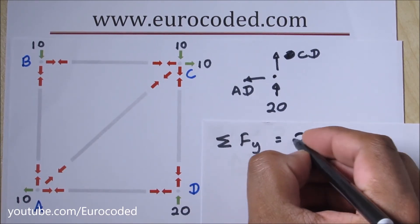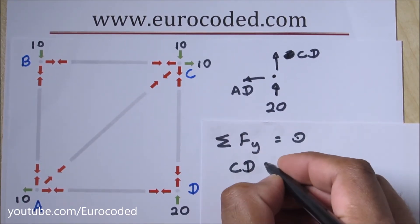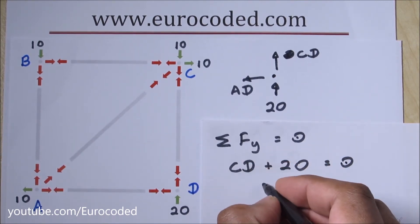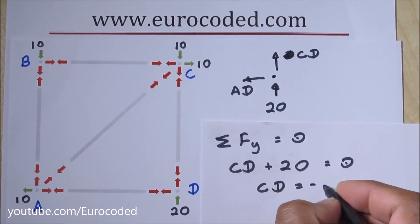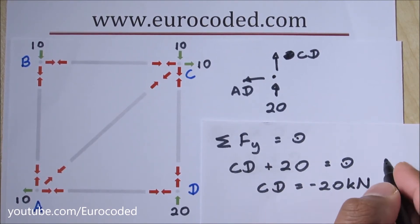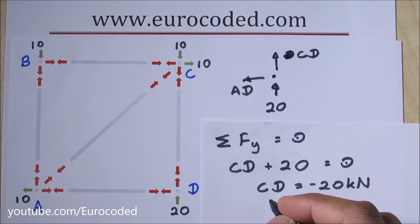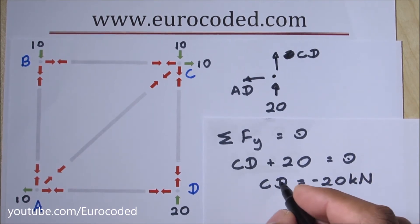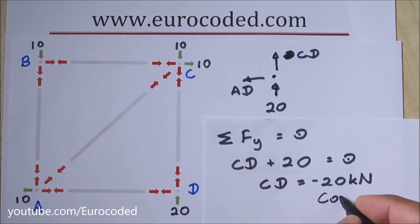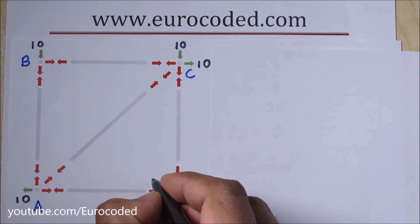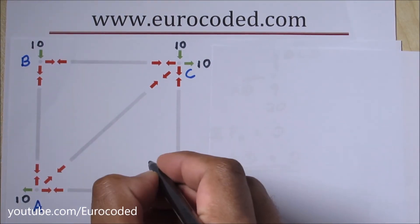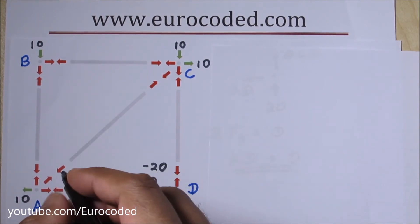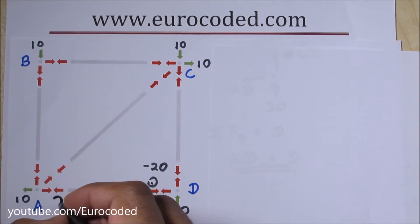If we look at vertical equilibrium, ΣFy equals zero gives: CD plus 20 equals zero, meaning CD is minus 20 kilo Newton. In other words, CD is acting in the opposite direction — it is in fact a compressive force. So AD is zero and CD is minus 20, a compressive force acting in the opposite direction.